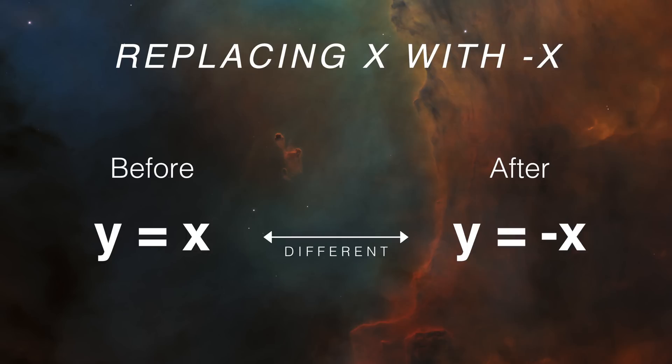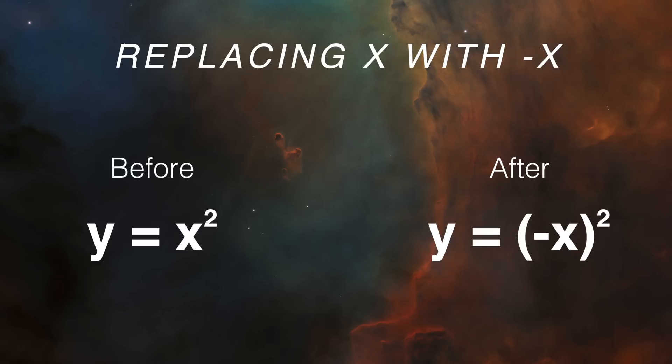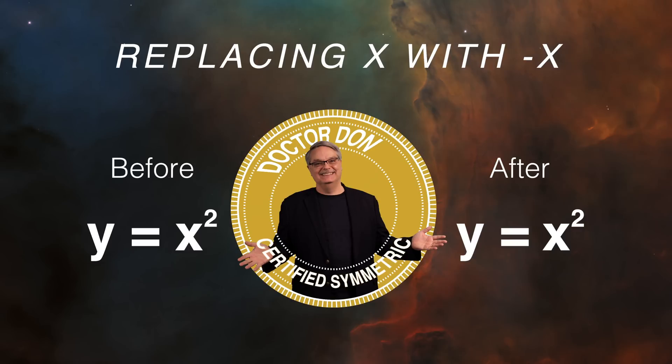On the other hand, what happens to the equation y equals x squared? If you replace x with minus x, this time you square the minus x and you get x squared again. This particular equation doesn't change under the replacement of x with minus x. We then say that the equation is symmetric under changing x with minus x.